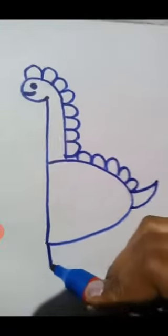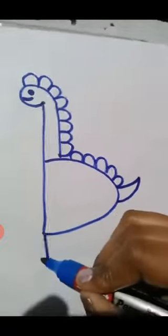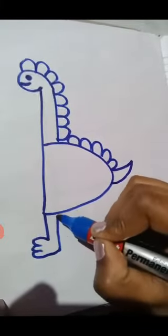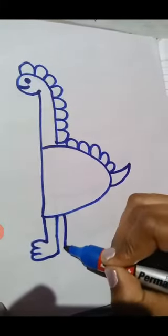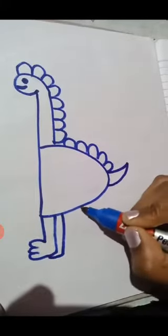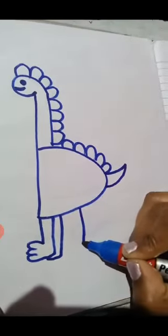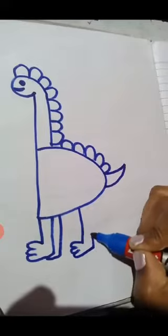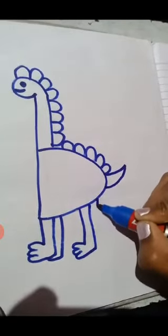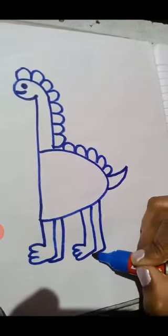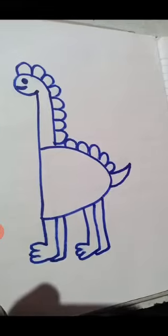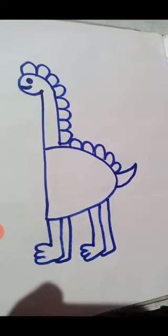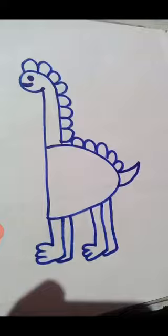Now make its legs. Like this. One more there. And on the other side. Now your dinosaur is ready and you can color it green. Thank you.